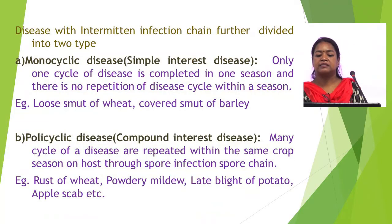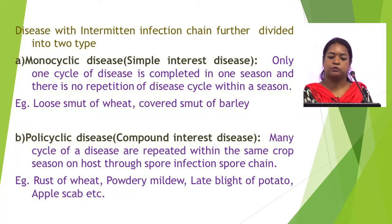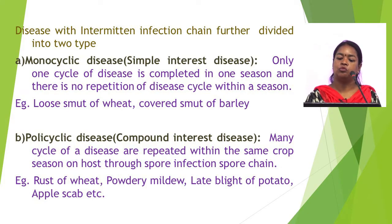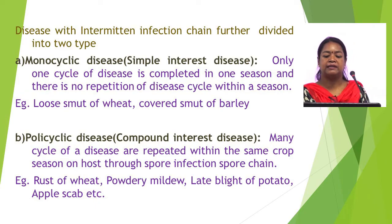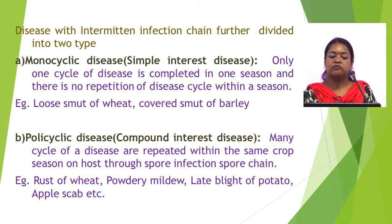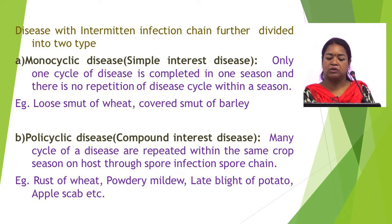The intermittent infection chain is further divided into two types. The first one is monocyclic disease or simple interest disease. In this type of disease, only one cycle is completed in one season and there is no repetition of the disease cycle within a season. Some examples of monocyclic diseases are loose smut of wheat and covered smut of barley.